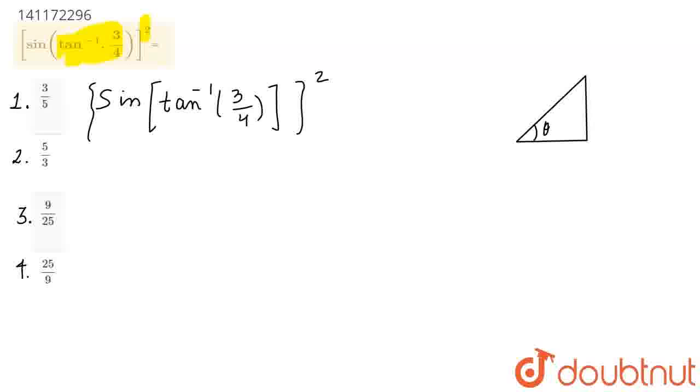So, let this angle be theta. Since we have tan inverse of 3 upon 4, let opposite be 3 and adjacent be 4 and this will be root of 3 square plus 4 square.